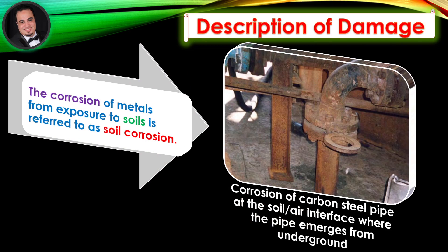Description of damage: The corrosion of metals from exposure to soils is referred to as soil corrosion. As illustrated in the figure, this includes corrosion of carbon steel pipe at the soil-air interface, where the pipe emerges from underground.